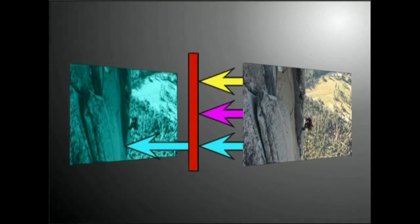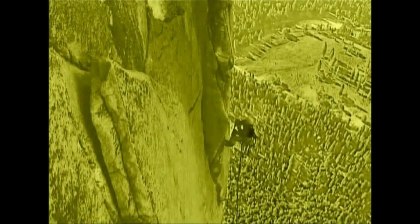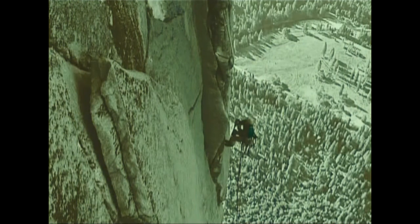Argi iragazki gorriarekin, zianaren negatibaren irudia lortuko dugu, argi iragazki gorriak izpi hori eta magentei bidea galerazten baitie. Laugarren irudia jatorrizko irudiaren zuri beltzeko argazkia eginez lortuko dugu. Irudi honetan zuritik beltzera dauden tonu grisak izango ditugu. Lau irudien batuketak jatorrizko irudiaren bikoizketa perfectua eman beharko liguke.